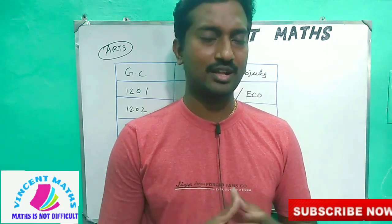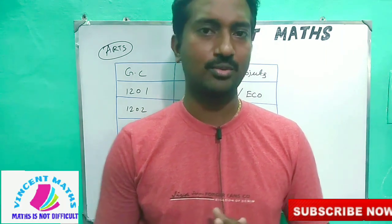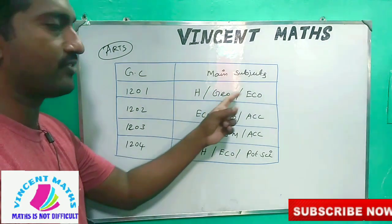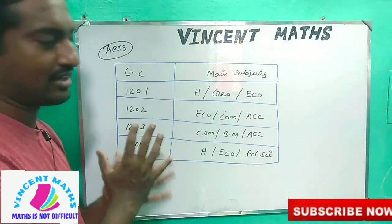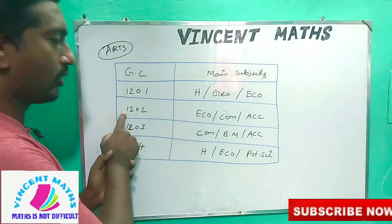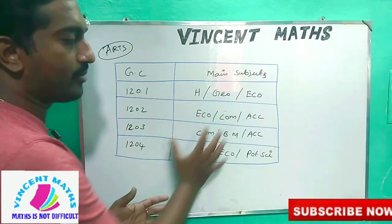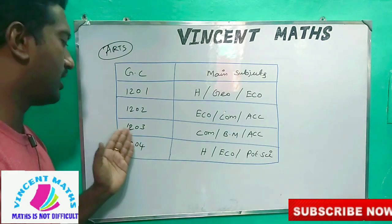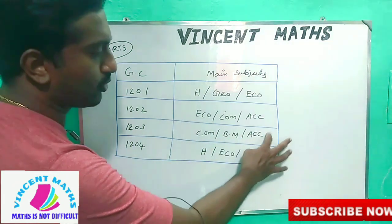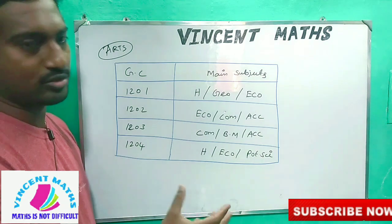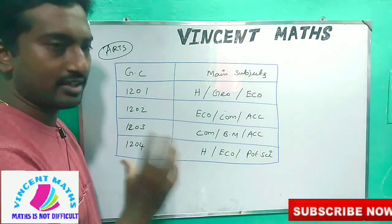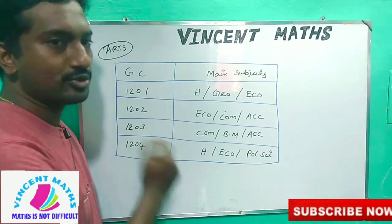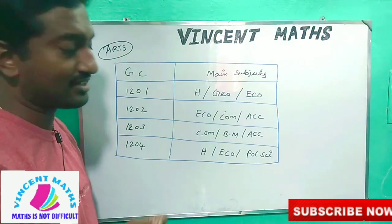If you study the arts group, it is very comfortable and it is easy to score. Now let's talk about our Commerce Group. The Commerce Group has history, geography, and economics — mostly in all the schools. It is economics and commerce. This group will be familiar with all of this. For example, commerce, business math, accountancy. This group has economics, commerce, and accountancy. If you choose business math, you can choose statistics, or business math.